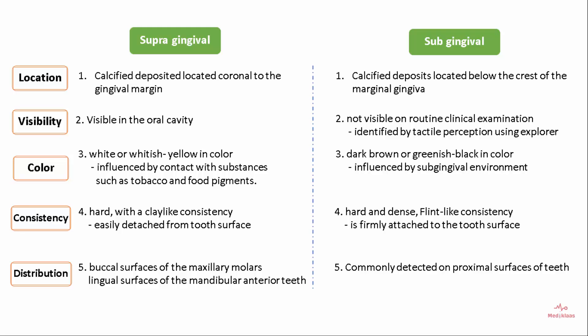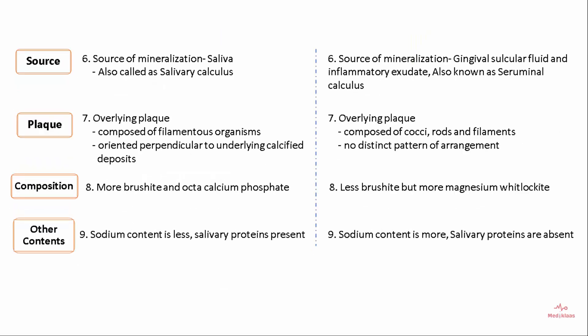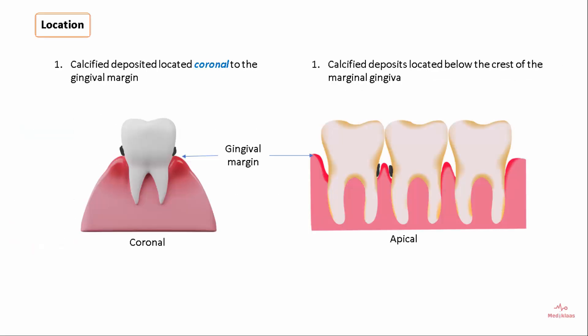The categories include location, visibility, color, consistency, distribution, source of mineralization, plaque composition, and other contents. Depending on location, supragingival calculus is a calcified deposit located coronal to the gingival margin, whereas subgingival calculus is a calcified deposit located below the crest of the gingival margin.